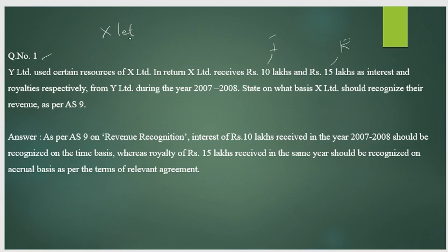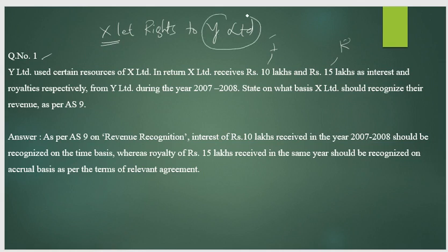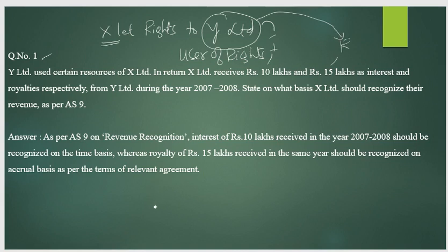X Limited has let out the rights to Y Limited. So Y Limited is the user of the rights. X Limited is the receiver of the revenue — Y Limited pays 10 lakh interest and 15 lakh royalty to X Limited.